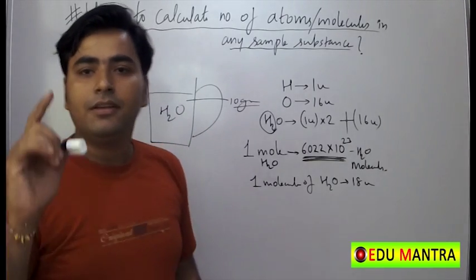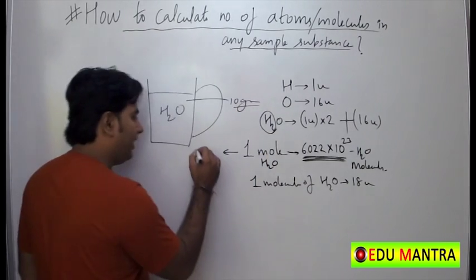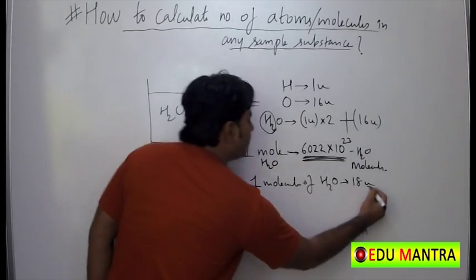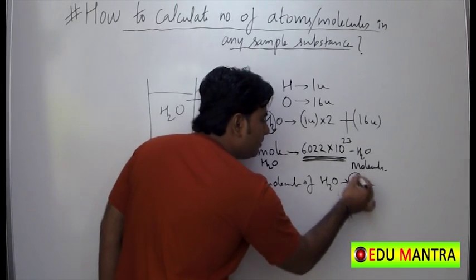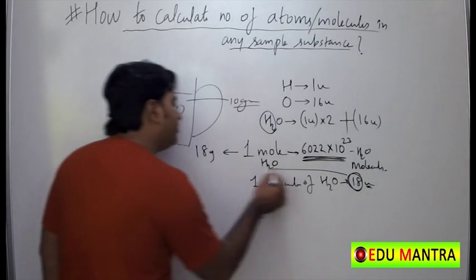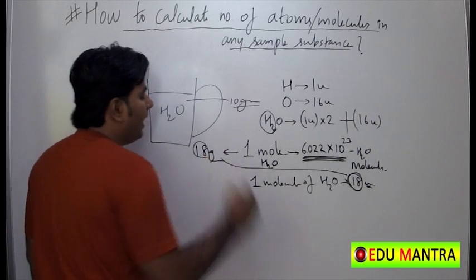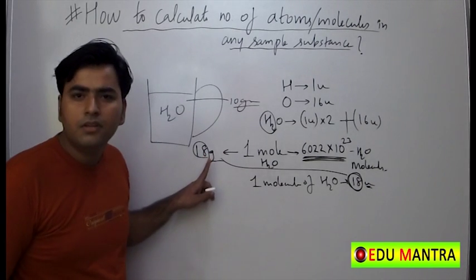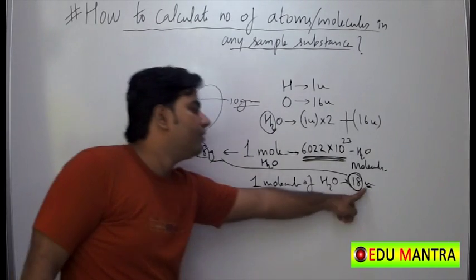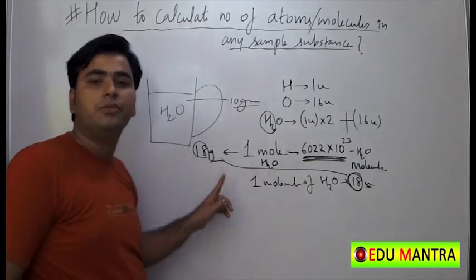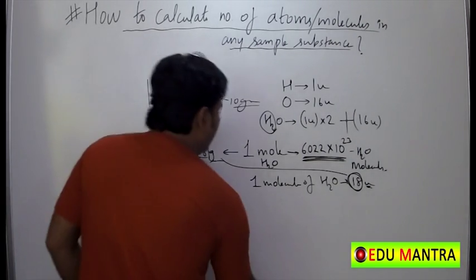One mole is also equal to the molecular mass in grams. So I can write one mole of water as 18 grams — not unified mass, but 18 grams. You just copy the molecular mass number and change the unit from unified mass to gram. This is called gram molecular mass.